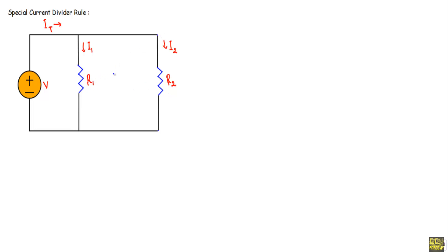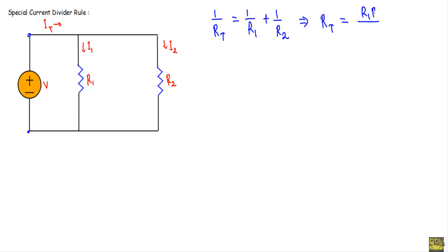There is a special application of the current divider rule when we have two resistors R1 and R2 connected in parallel. In this circuit, the equivalent resistance Rt is found from: 1/Rt = 1/R1 + 1/R2, which gives Rt = R1 × R2 / (R1 + R2). Applying the current divider rule, I1 = Rt/R1 × It.